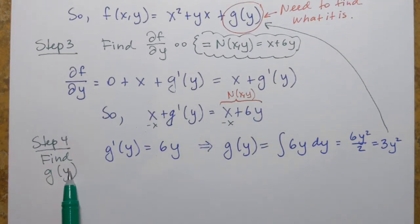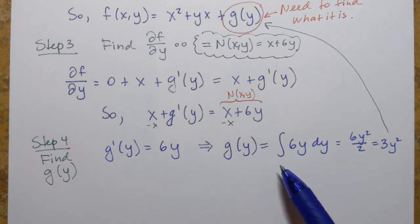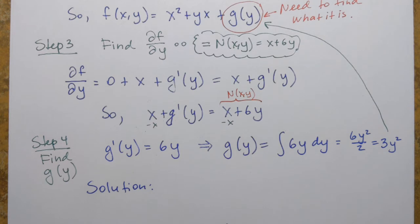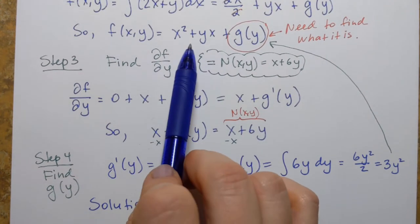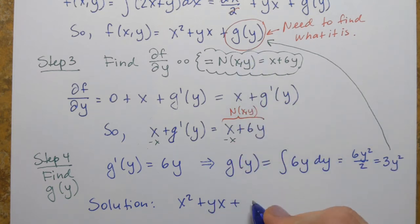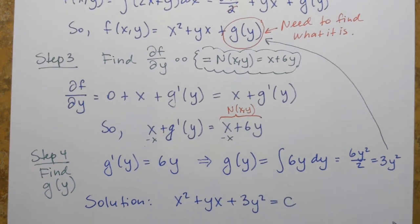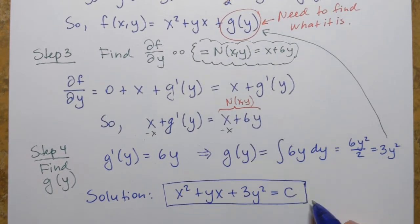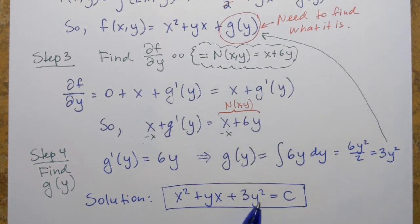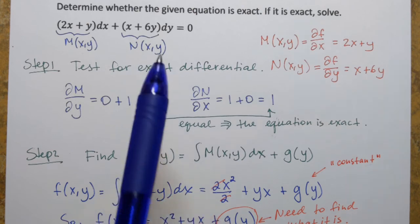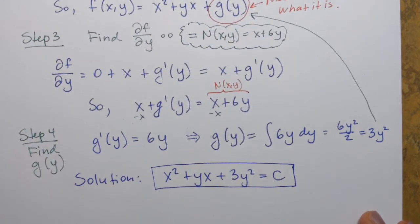So the solution is f of x, y equals constant. Putting it all together: x² plus yx plus 3y² equals C. If you want to verify this solution, find the partial derivatives of this function — first with respect to x, then with respect to y — and you should end up with M of x, y and N of x, y respectively. If you get those, you have the correct solution.